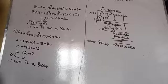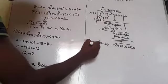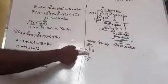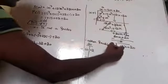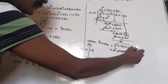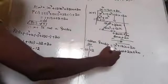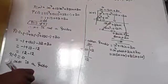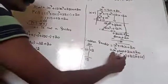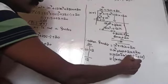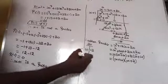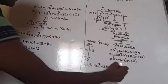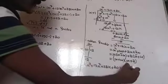We obtain a quadratic polynomial x² + 12x + 20. Factorize by splitting the middle term: product of two integers is 20, sum is 12, so +10 and +2. Split: x² + 10x + 2x + 20 = x(x + 10) + 2(x + 10) = (x + 10)(x + 2). Therefore x³ + 13x² + 32x + 20 = (x + 1)(x + 10)(x + 2).